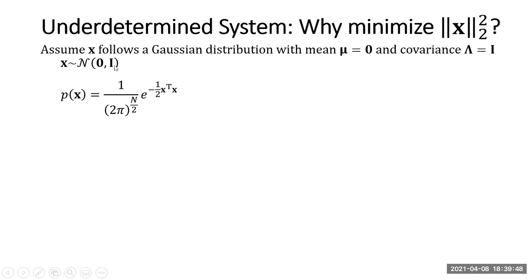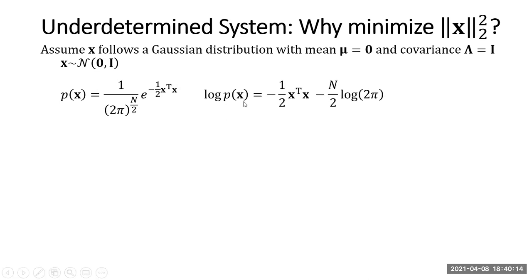With parameters mu equals zero and covariance I. Taking the log to simplify: log p(x) equals negative half x-transpose x, minus n/2 times log(2π). Note that the term n/2 log(2π) is a constant, independent of x. We concentrate only on the term negative half x-transpose x.